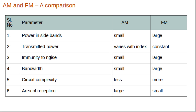Regarding noise immunity — how well a system avoids noise effects: in AM, noise easily affects the signal because the message is in the amplitude, so noise immunity is poor. In FM, noise immunity is very high because the message is in the frequency, not the amplitude, and noise cannot affect the frequency. Regarding bandwidth: AM requires very small bandwidth compared to FM, while FM requires very large bandwidth.